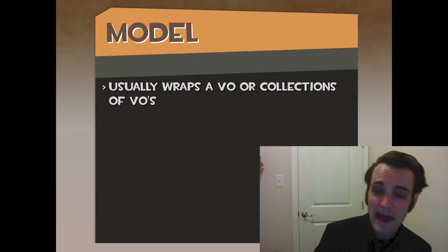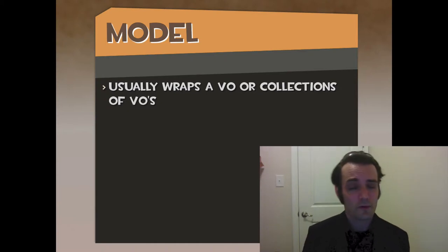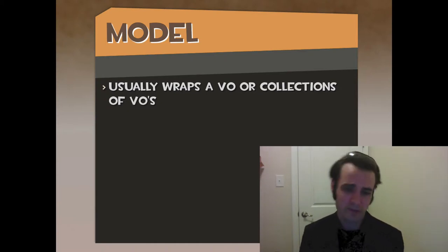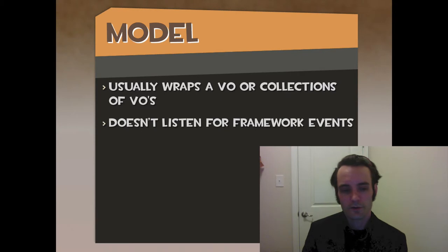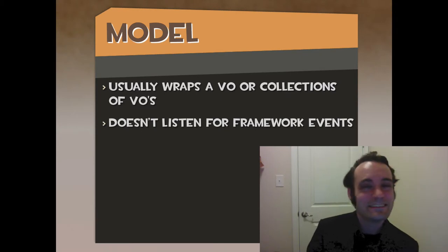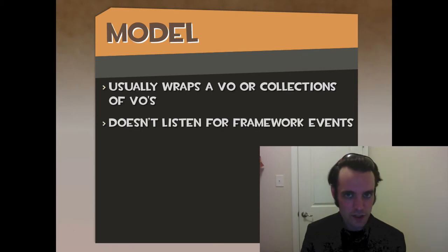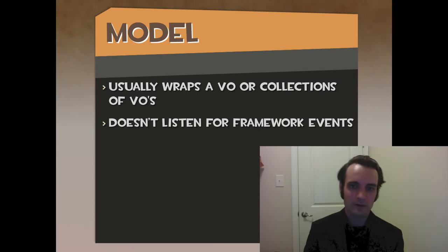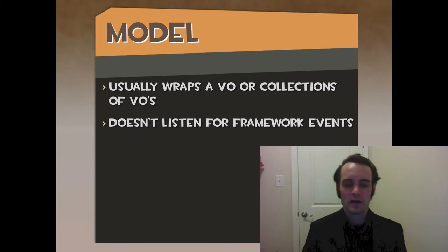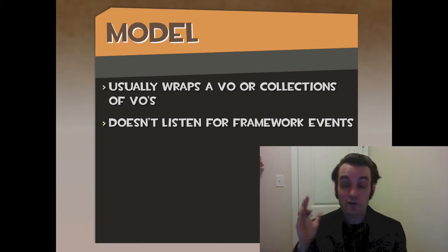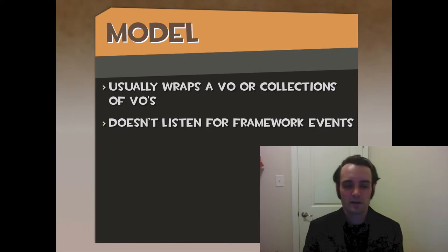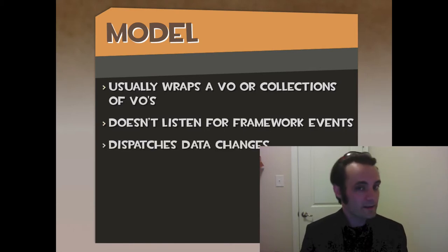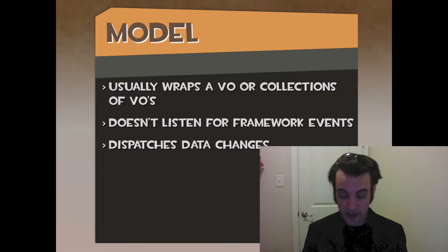It usually wraps a VO or a collection of VOs — DTOs. That's what models usually do. It doesn't listen for framework events, so you don't have a model listening for a change elsewhere. It's an observer pattern for itself, not for others, unless it's a facade with a bunch of models — then it's different, it's not a model. What it does do is dispatch data changes, just like any other observer pattern.